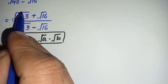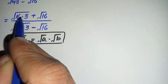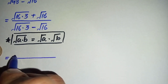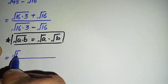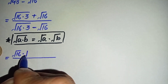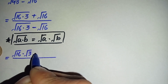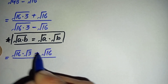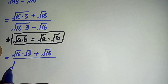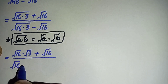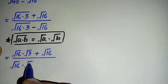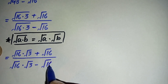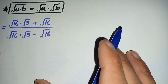We will split the square root over 16 and 3 in the numerator and denominator. So it will become: square root of 16 times square root of 3, plus square root of 16, in the numerator; and in the denominator it will become square root of 16 times square root of 3, minus square root of 16.